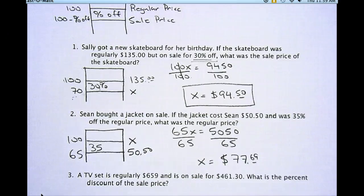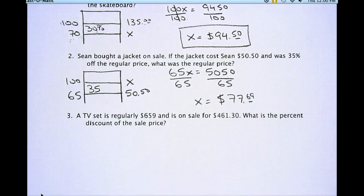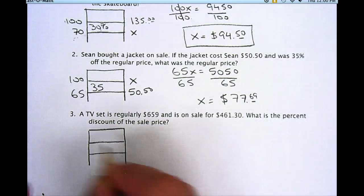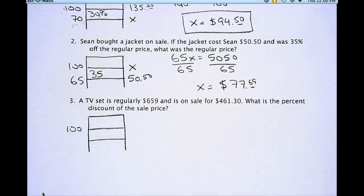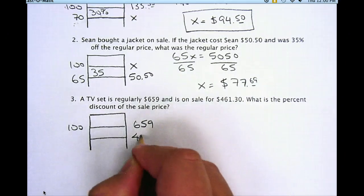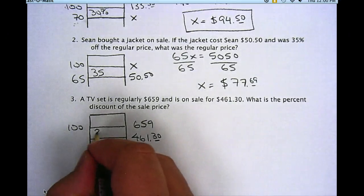So now I've done two problems — one where I found the sale price, one where I found the regular price. The last one I'm going to find the percent off. Remember, before I do the problem I always set up my thermometer, drawing it with 100 in the middle line. A TV set is regularly $659 and is on sale for $461.30. What was the percent discount? I put the regular price across from 100, which is $659. My sale price is $461.30 below my regular price, and I'm trying to find the percent discount, which goes in the middle.